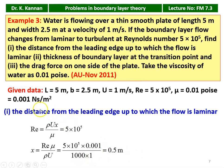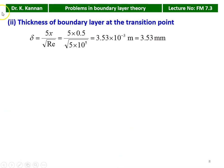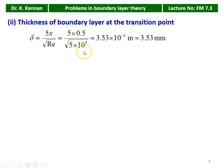The total plate length is 5 m, so flow is laminar up to 0.5 m, then becomes turbulent. The boundary layer thickness at the transition point: δ = 5x / √Re = 5 × 0.5 / √(5 × 10⁵) = 3.53 × 10⁻³ m = 3.53 mm.